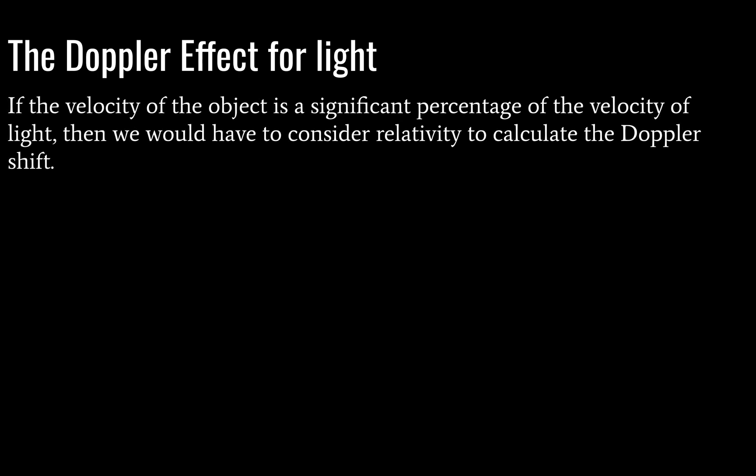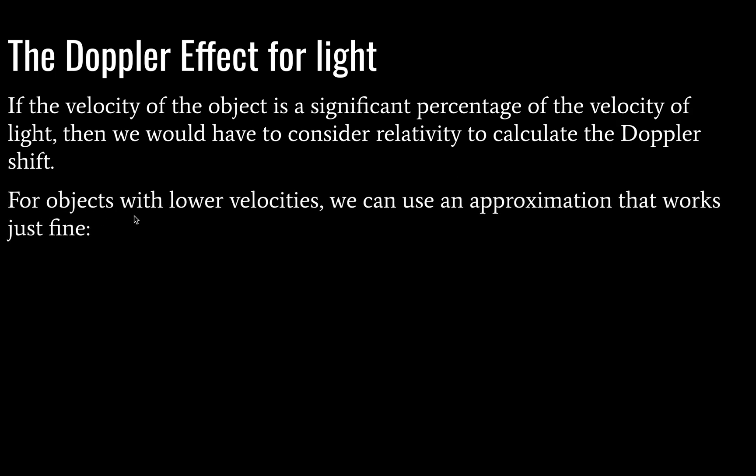Okay, for light, things get a little tricky if you're moving at a very, very high velocity, a significant percentage of the speed of light. And in that case, we would definitely have to include relativity in our calculation of Doppler shift. I'm not actually sure if the IB physics option covers that, because there is an option for relativity, and I need to look it over. I don't teach that option, but maybe someday. Anyway, for objects with lower velocities, we just use an approximation, and it looks like this, where we have this delta f divided by f equals v divided by c approximately.